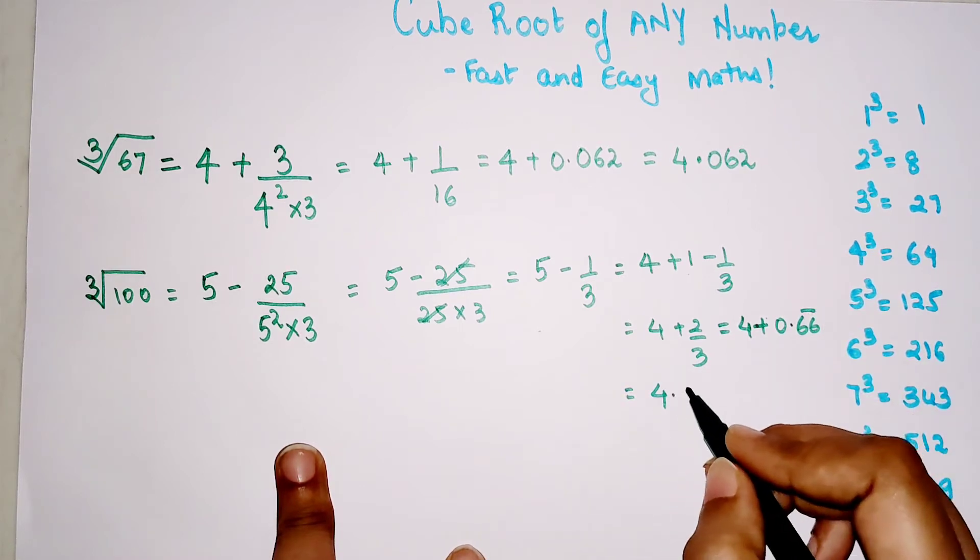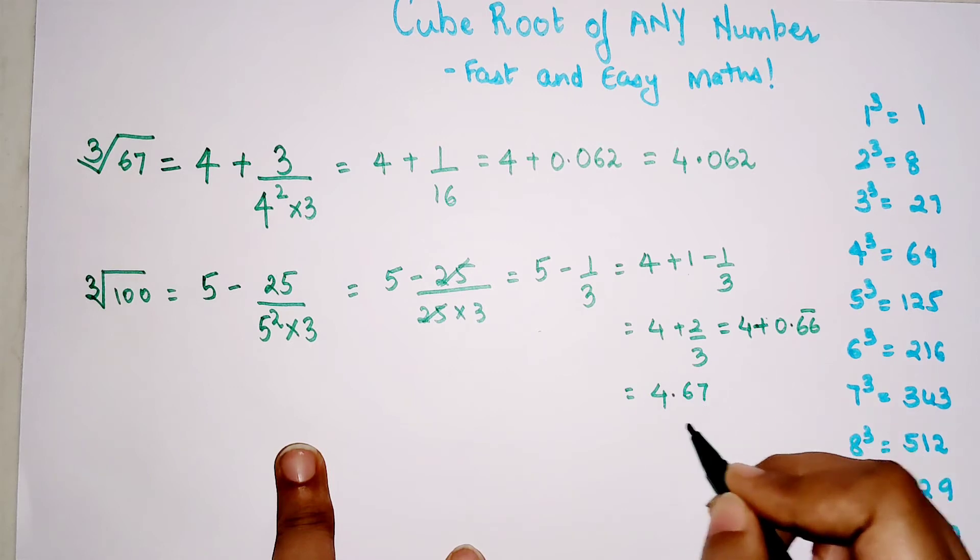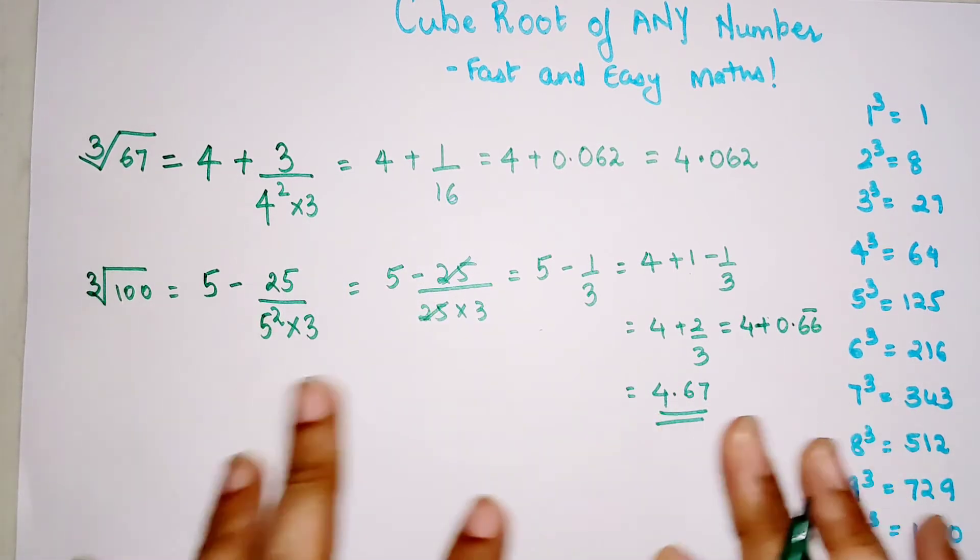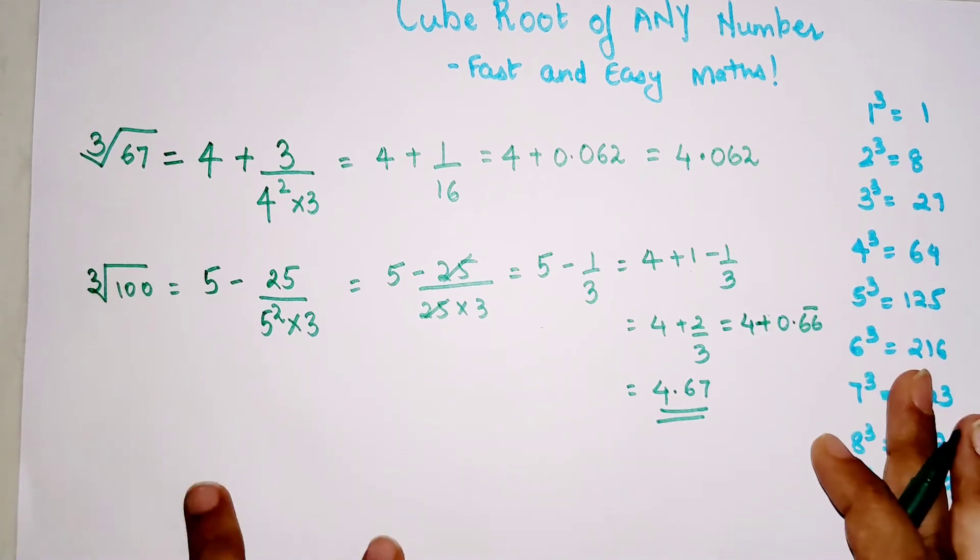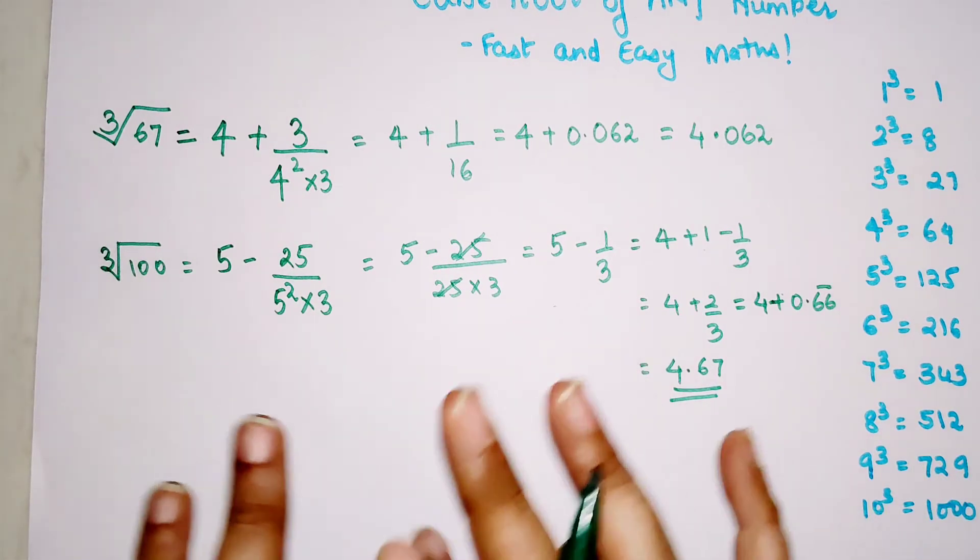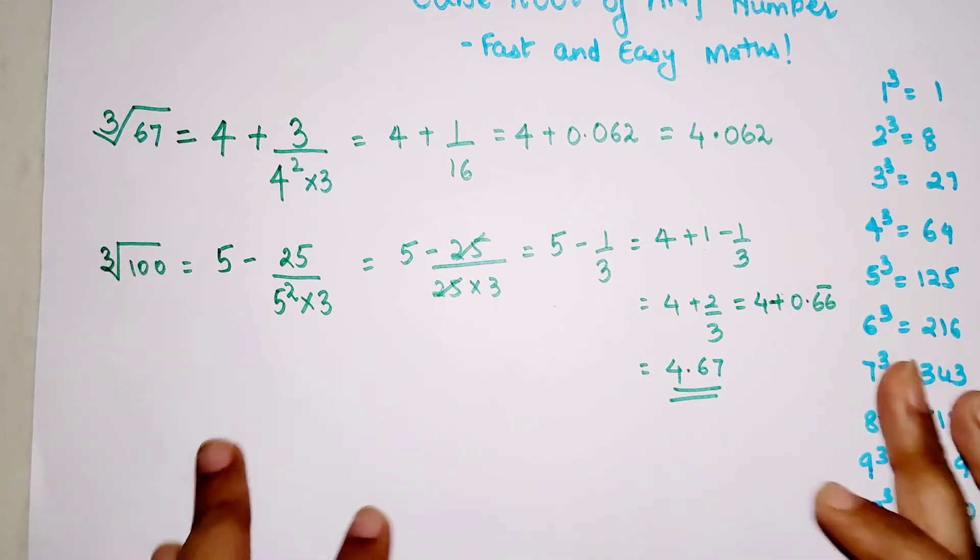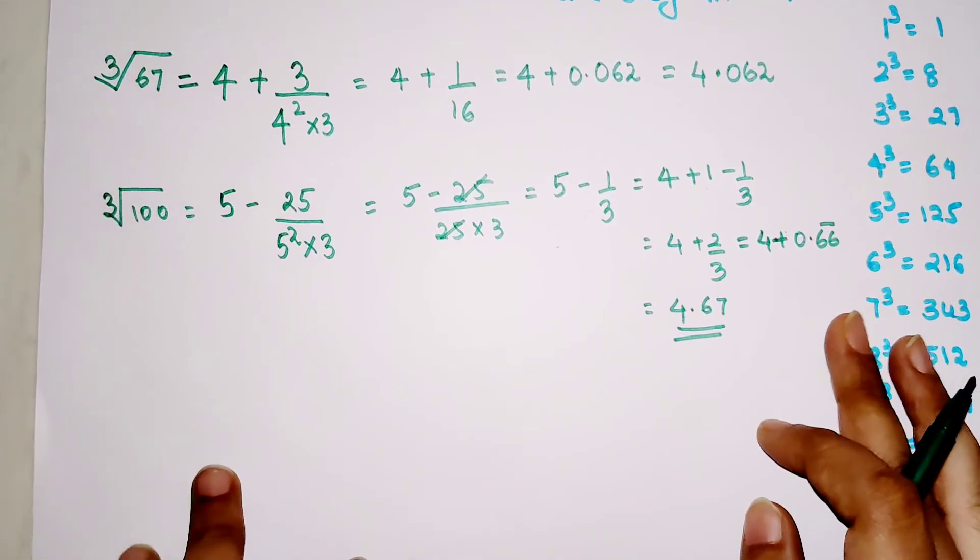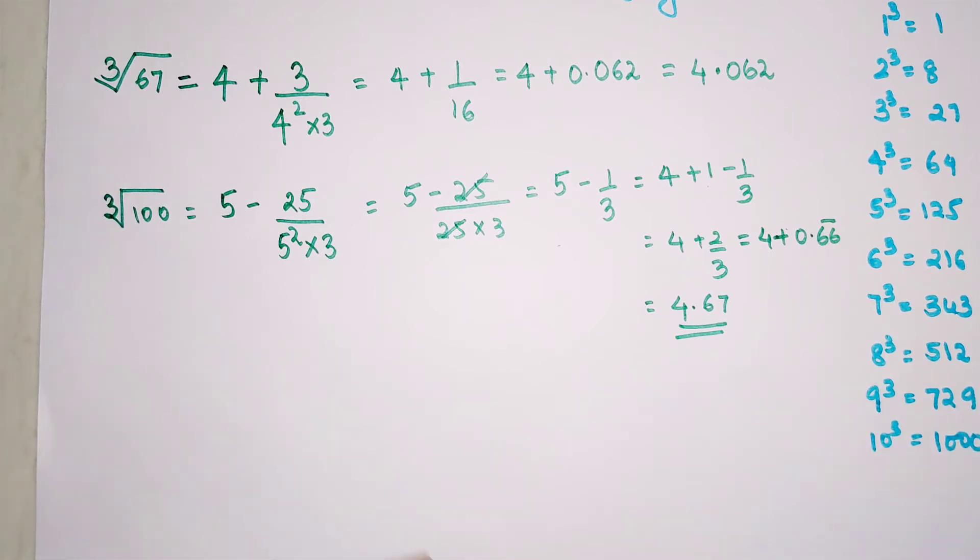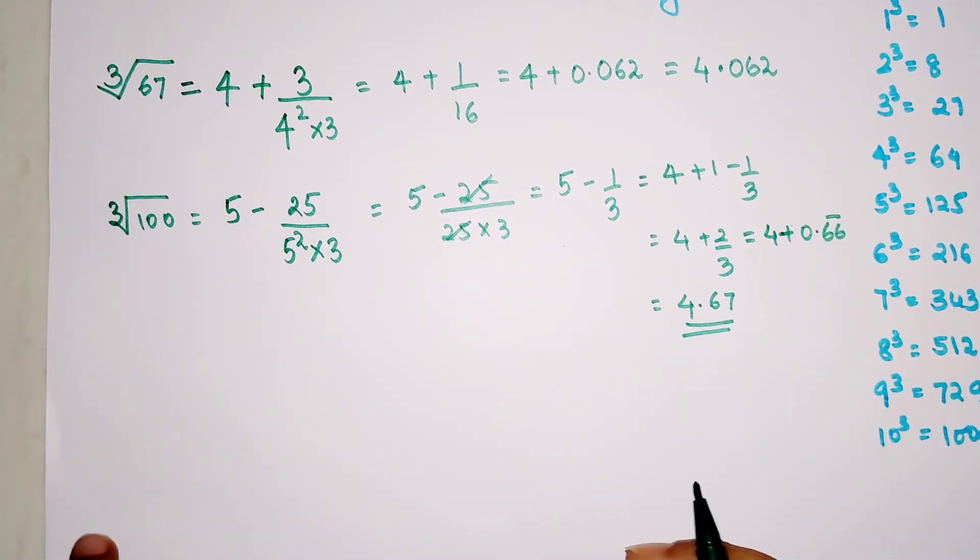That's recurring, so we can just round it off to 4.67. So I hope you have understood how to do this kind of cube root of any number. This is a wonderful trick. Please, it will really mean a lot to me if you can hit the like button, because that really tells the YouTube algorithm that these kinds of videos are important for anyone looking for math-related videos.